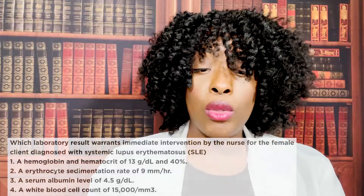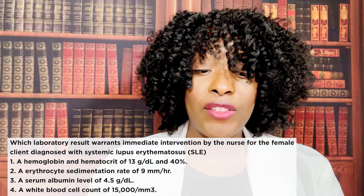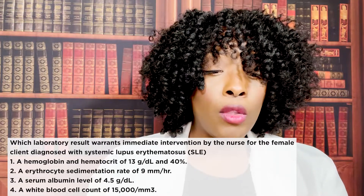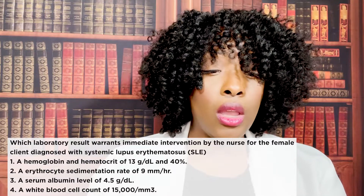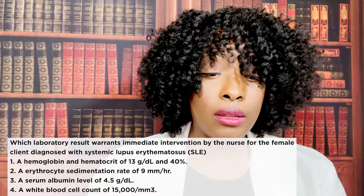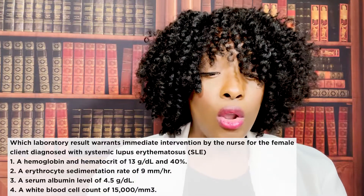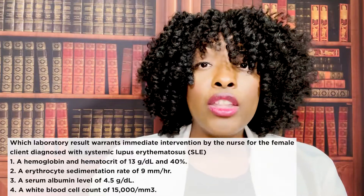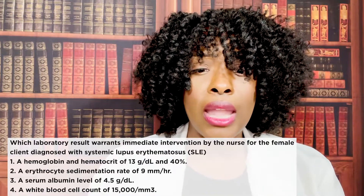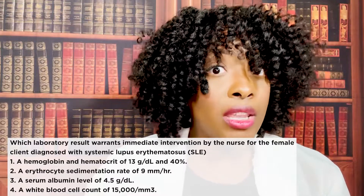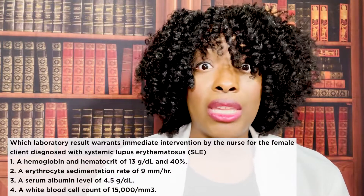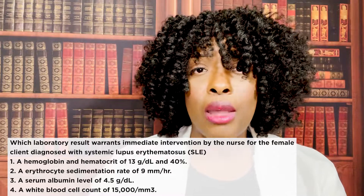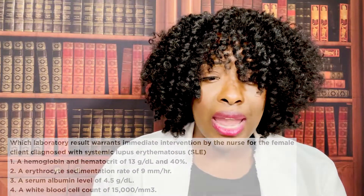Which laboratory result warrants immediate intervention for the female client diagnosed with systemic lupus erythematosus (SLE)? The correct answer is four: a WBC of 15,000. This patient has lupus — they are already immunocompromised. We are watching them very closely because we don't want them to get an infection. The normal WBC range is 5,000 to 10,000, so a WBC of 15,000 means we're suspecting this patient has an infection.